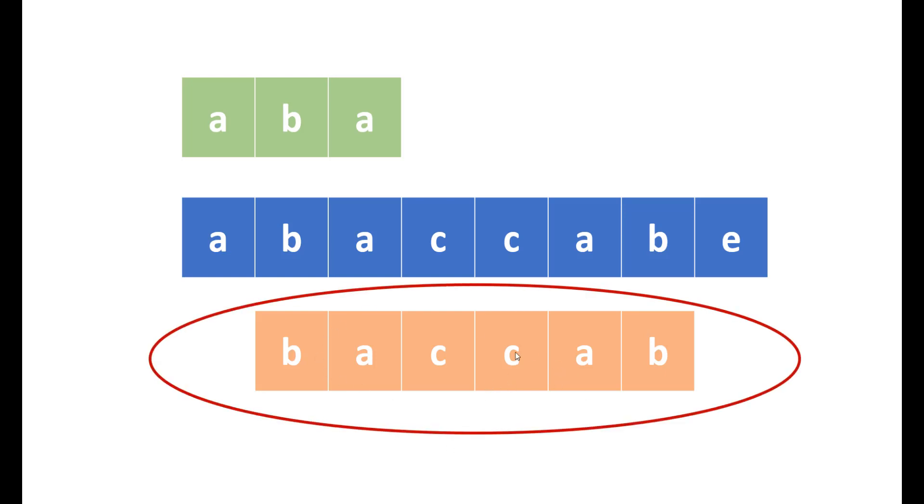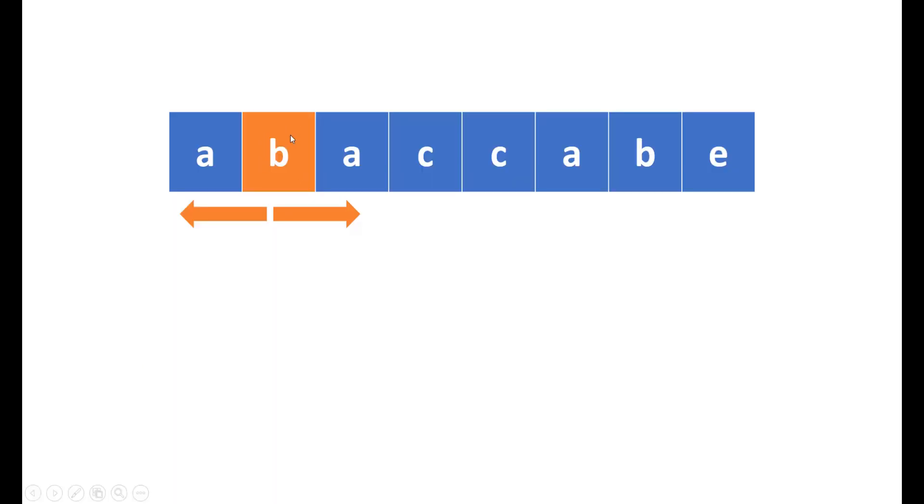So now let's take one step ahead and see how we can solve this question. Suppose you are at B and you need to find a palindrome whose center is B. In this case, you will go in left and right and start comparing the characters at left and right. And if these are equal, then you can say that ABA is a palindrome. Or else if there would be another character C, then CABAC would have been a palindrome.